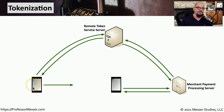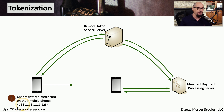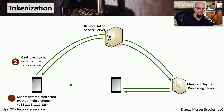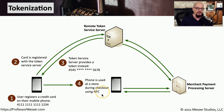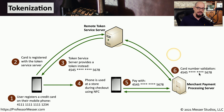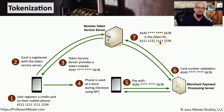Here's how the tokenization process works. It begins with the phone, where we register our credit card on our mobile device. Once we register that with the token service server, it provides us with a token instead of a credit card number, and that token is stored on our mobile device. We then take our phone or watch to the store and pay at checkout using near field communication. That communicates to the merchant's payment server, which communicates back to the token service server to check the token provided during checkout. This confirms it is a valid token for a valid credit card number, and it informs the merchant that the token is valid and the transaction is approved.